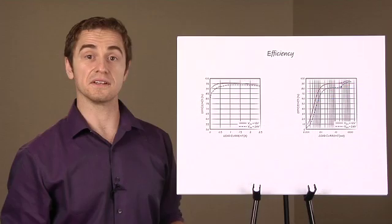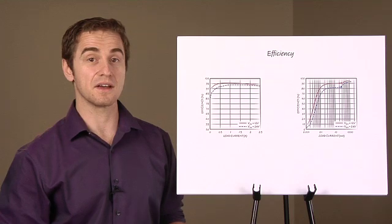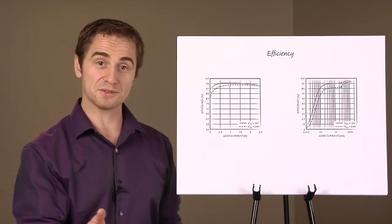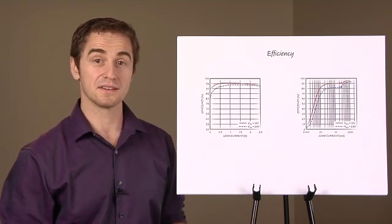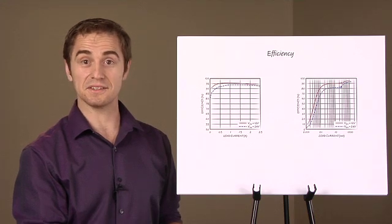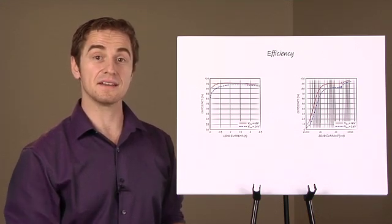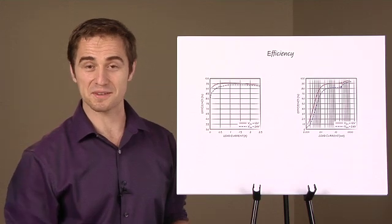For an ideal linear regulator with zero quiescent current, efficiency is 5 volts divided by 12 volts or 42%. Compared with the ideal LDO, the LT8610 will have higher efficiency at load currents above 3 microamps.